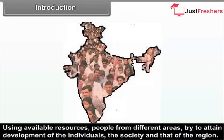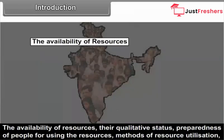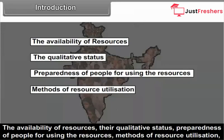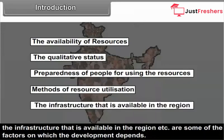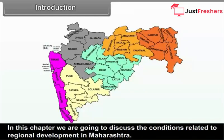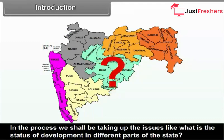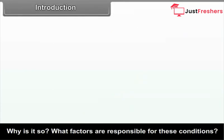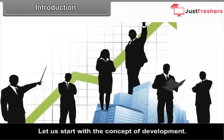The availability of resources, their qualitative status, preparedness of people for using the resources, methods of resource utilization, the infrastructure available in the region, etc. are some of the factors on which development depends. In this chapter, we are going to discuss conditions related to regional development in Maharashtra — what is the status of development in different parts of the state, why is it so, and what factors are responsible. Before that, it is necessary to understand various concepts related to development.